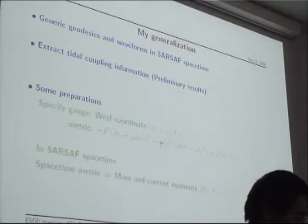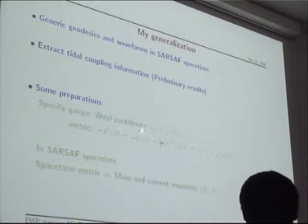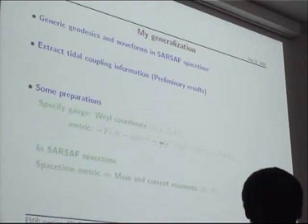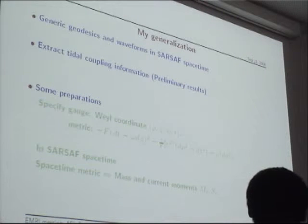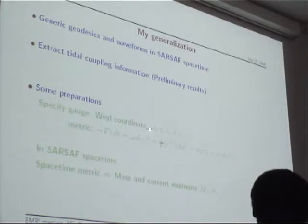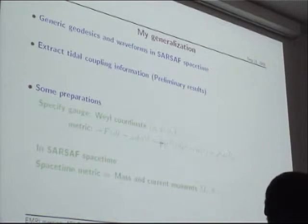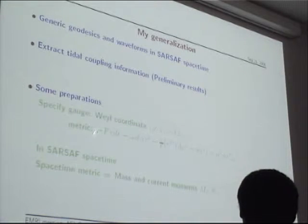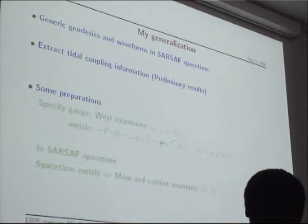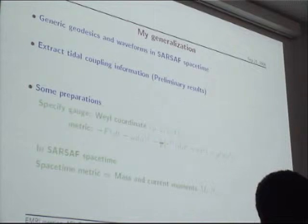Before doing that, I would like to specify the gauge in this problem. In a stationary, axisymmetric, reflection-symmetric across the equatorial plane, and asymptotically flat spacetime, there is a natural choice of coordinates. We use the so-called Weyl coordinates: rho, z, phi, and t. In these coordinates, the metric can be written in the familiar form, where F, omega, and gamma are three functions that only depend on rho and z coordinates — they don't depend on phi or t because of the two symmetries in this problem.